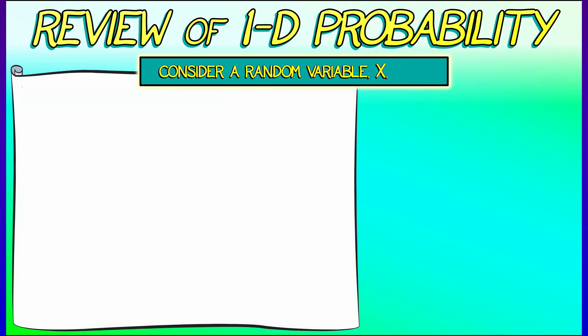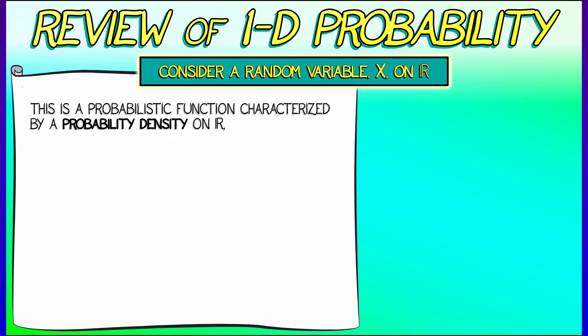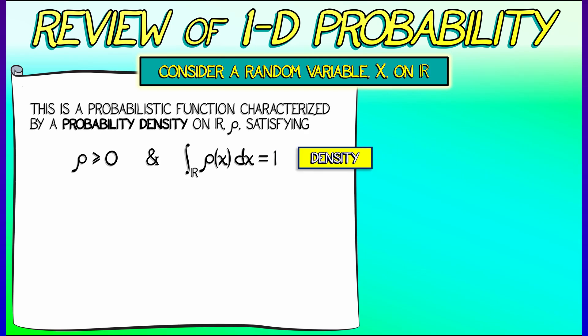We're going to consider a random variable x on the reals, characterized by a probability density function. I'm going to use the same letter rho that we use for mass density to describe probability density. Such a function has to be non-negative — that makes sense — and importantly, when you integrate rho over the entire reals you get a value of one.